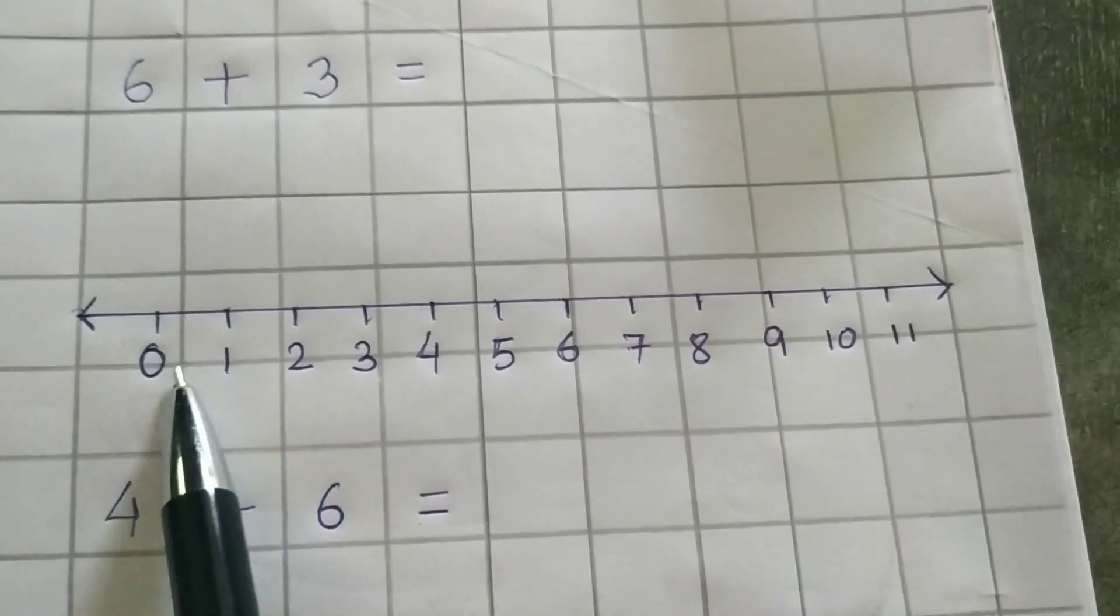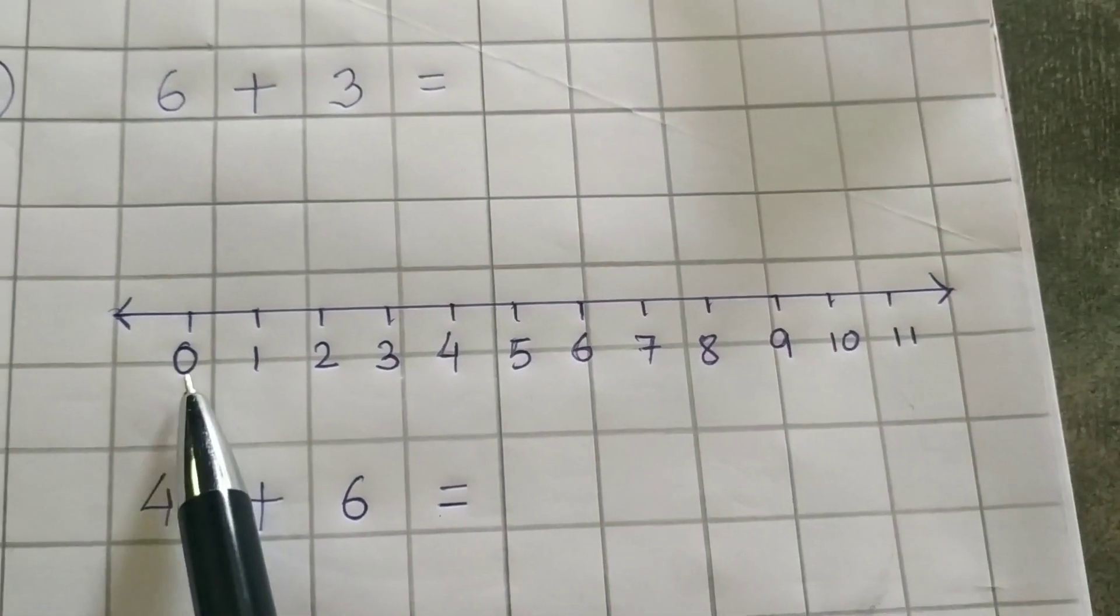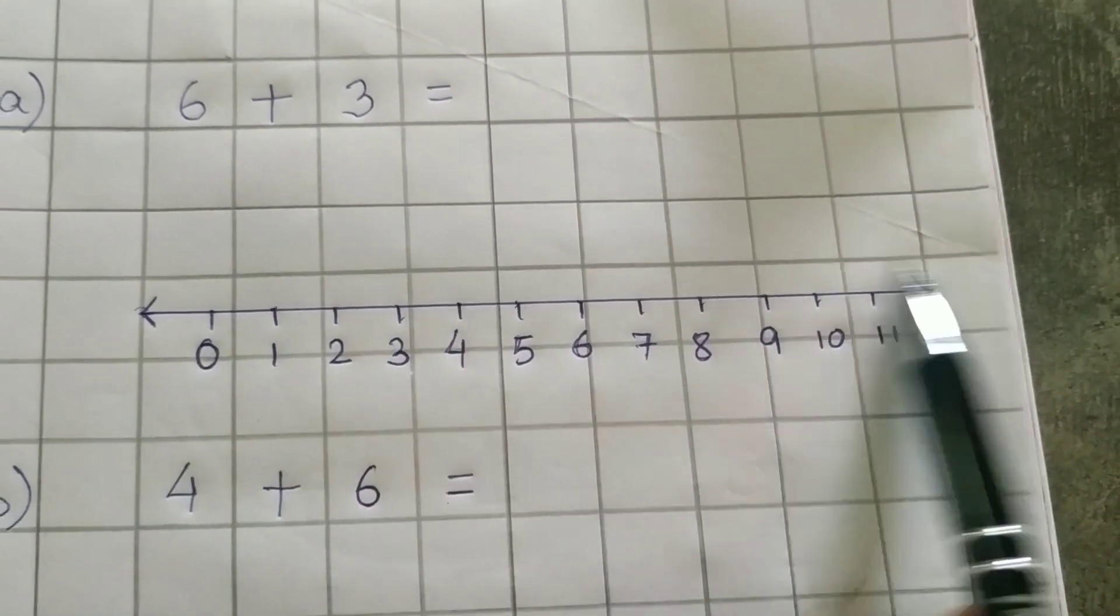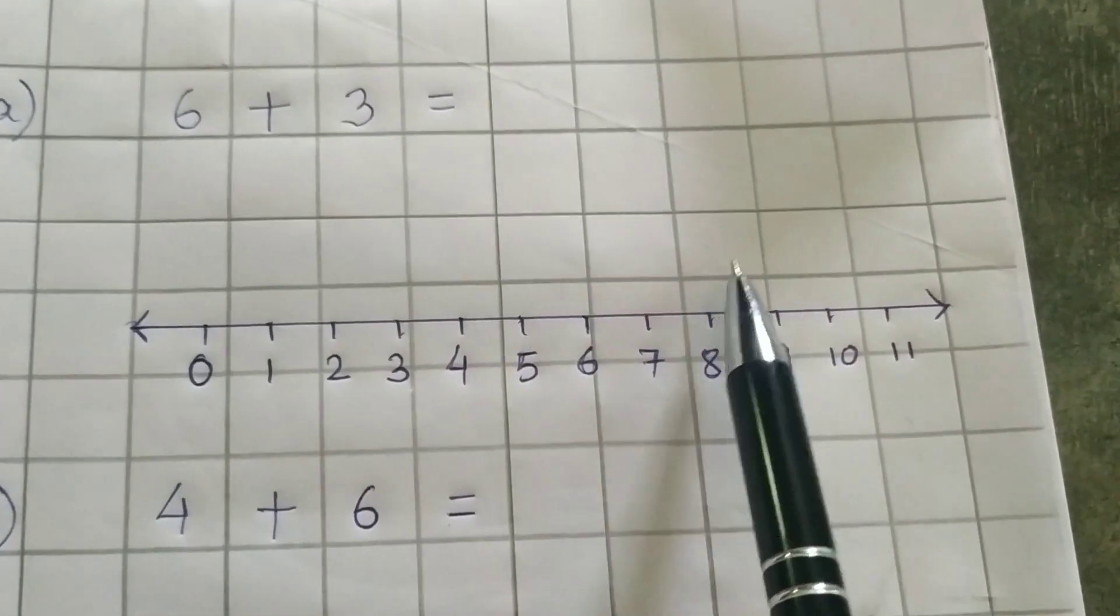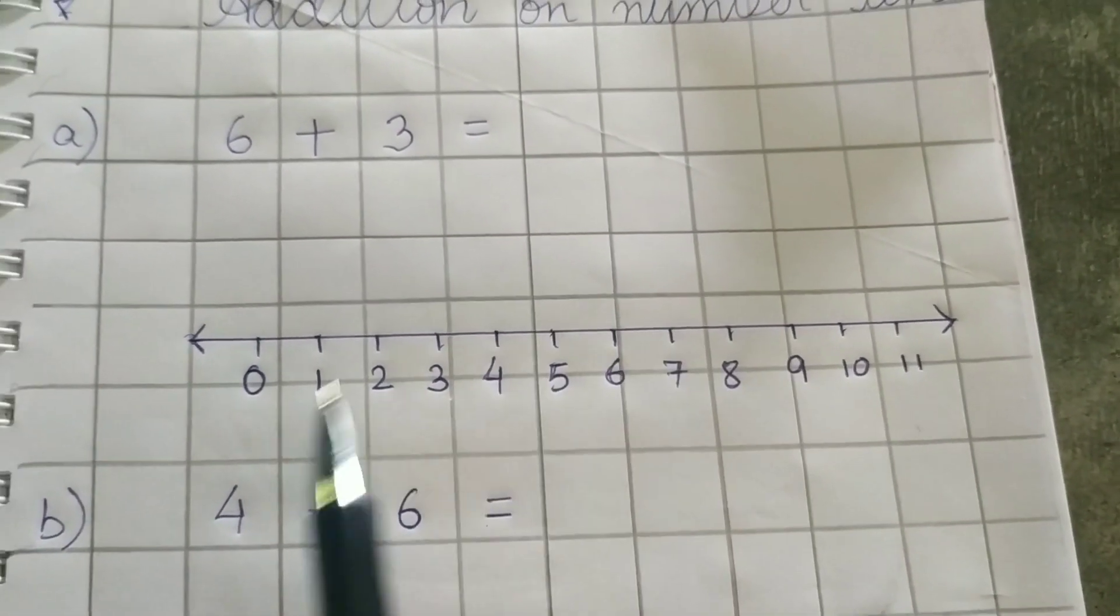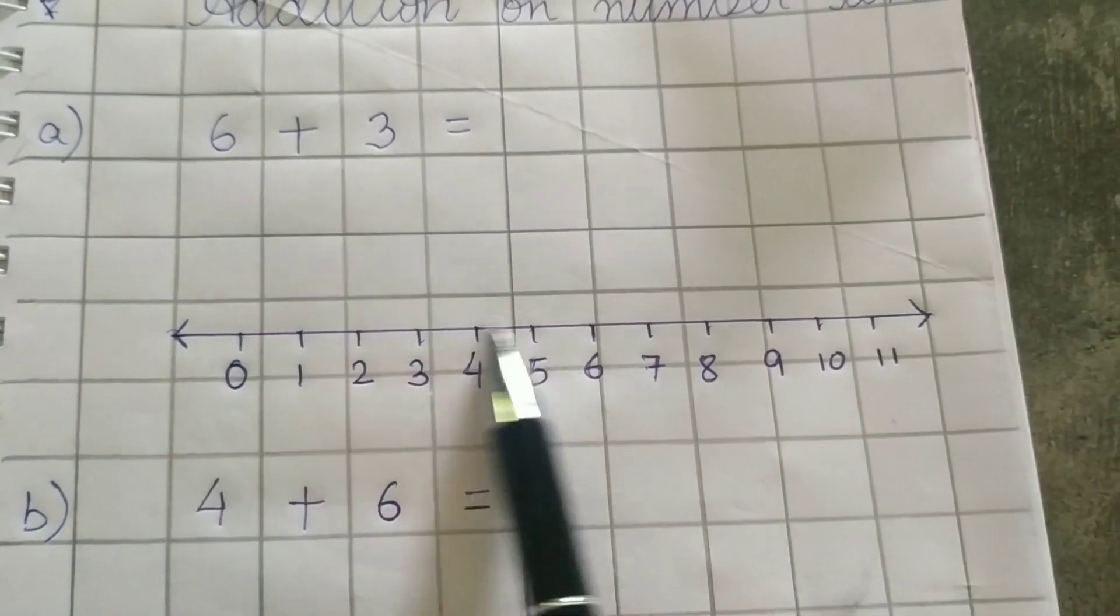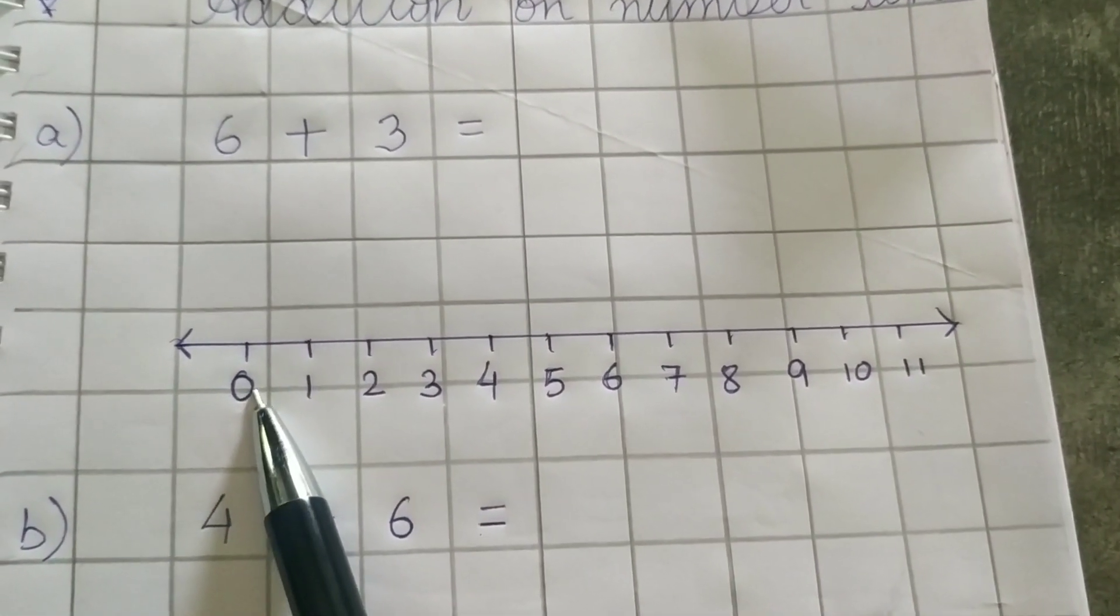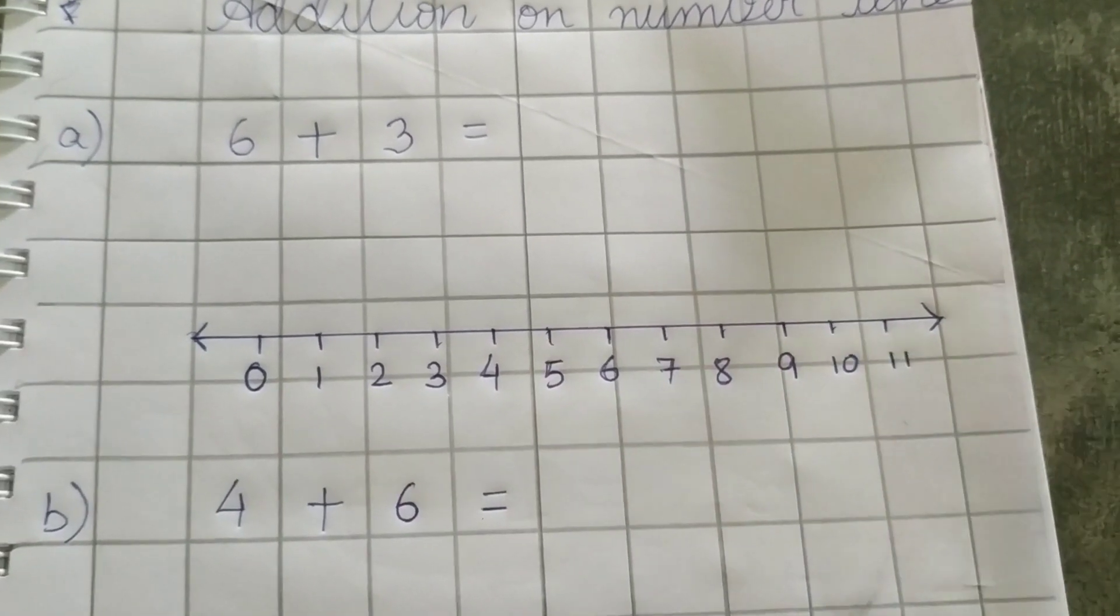So this is the number line. It starts from 0. From 0 to infinity. Infinity means uncountable, those which are not counted. So this is the number line. First is 0, then the number goes as well.